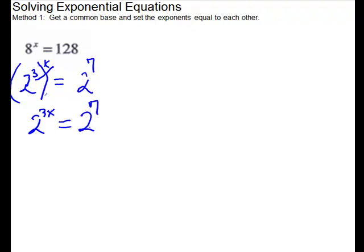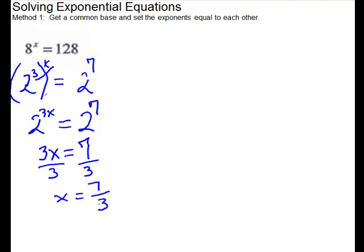And now we have the bases the same, so we set the exponents equal to each other and then we can solve. You're going to get a fraction on this one, but it's okay to get a fraction. So x equals 7 thirds.